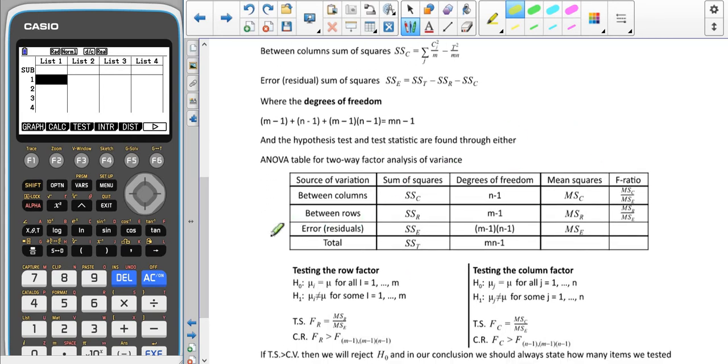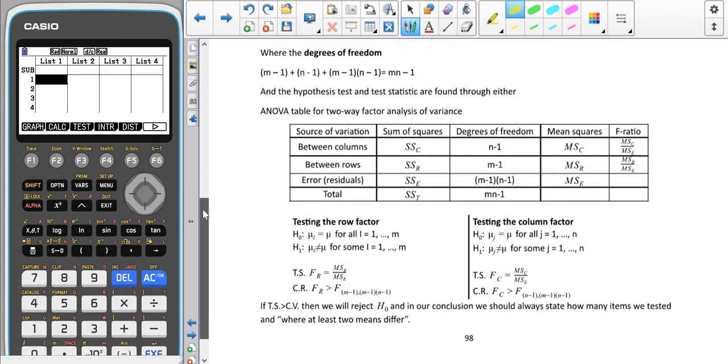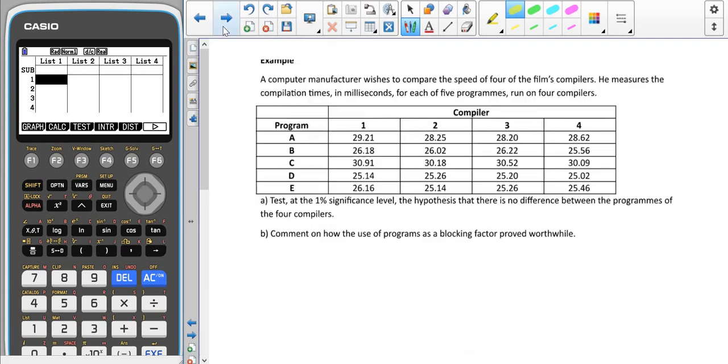You can see we have an extended table here. This time we could be looking for a difference between whatever we've got in our rows, we could be looking for a difference between whatever we've got in our columns, and this time we're going to have an extra thing which is the residual as well as the total. Usually we use i's for rows and j's for columns, but you're not going to get marked down too much for that in class.